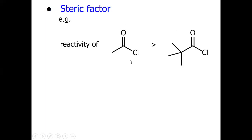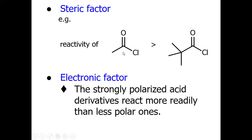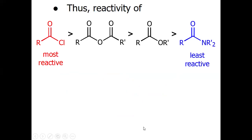For example, this is acetyl fluoride and this is a substituted acyl chloride bearing a bulky tertiary alkyl group. Because of this steric hindrance, the substituted compound is less reactive, while the absence of steric hindrance makes the other more reactive. Similarly, electronic factors can enhance or decrease reactivity; strongly polarized acid derivatives react more readily than less polar ones. The most reactive carboxylic acid derivative is acyl chloride and the least reactive is the amide. This is also because of leaving group tendency.